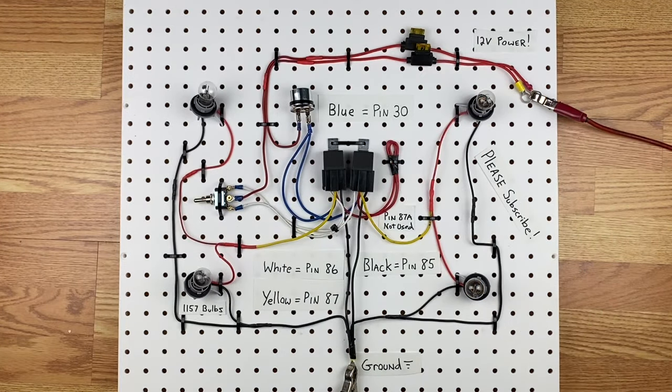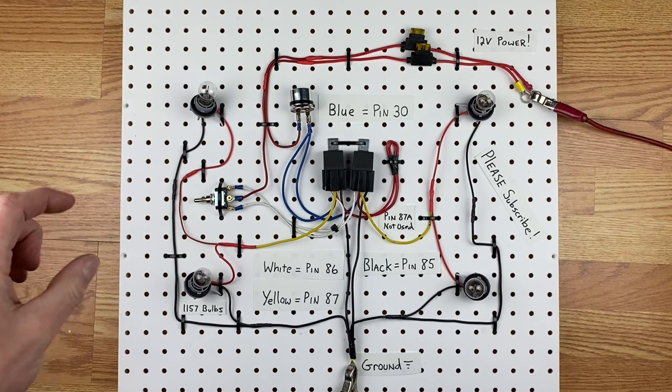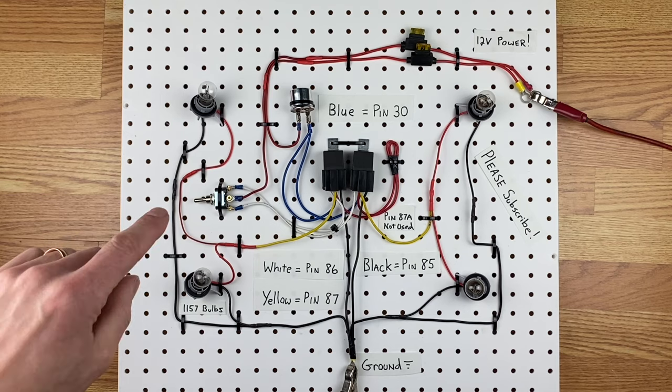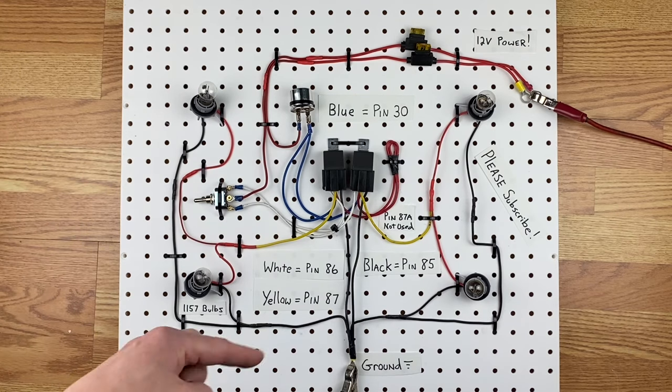One thing to note is that your ground wires don't all need to be connected together like mine are. They can actually ground right to a chassis. So if you were mounting this in a car or a four-wheeler or a motorcycle, you can mount all of these ground wires straight to the chassis and the whole chassis will be grounded, so you don't have to actually tie all the grounds together.